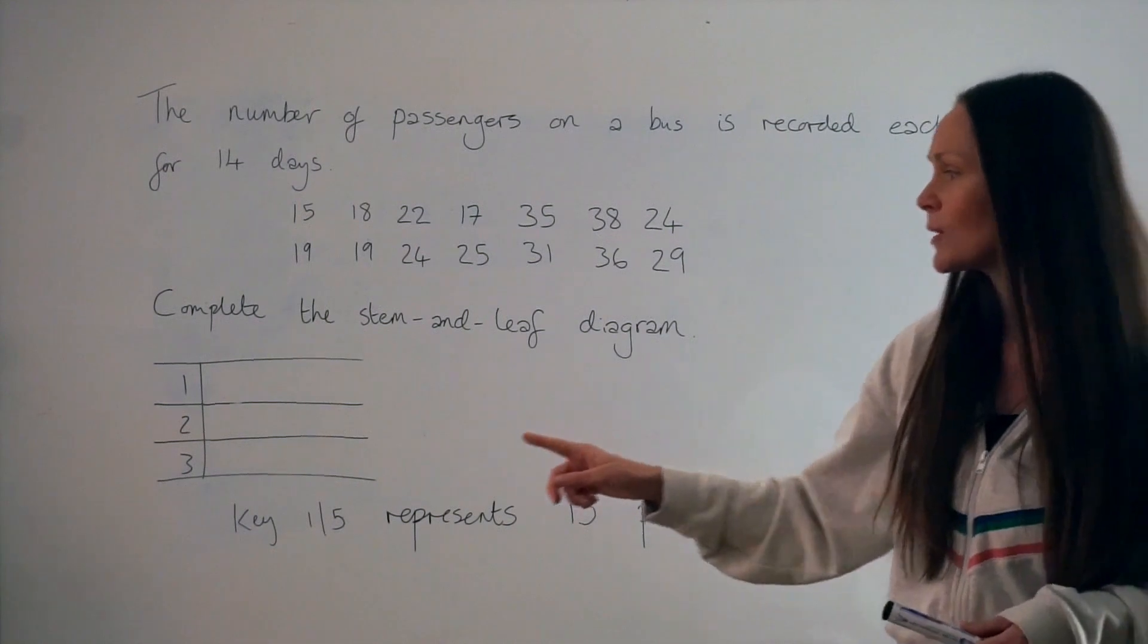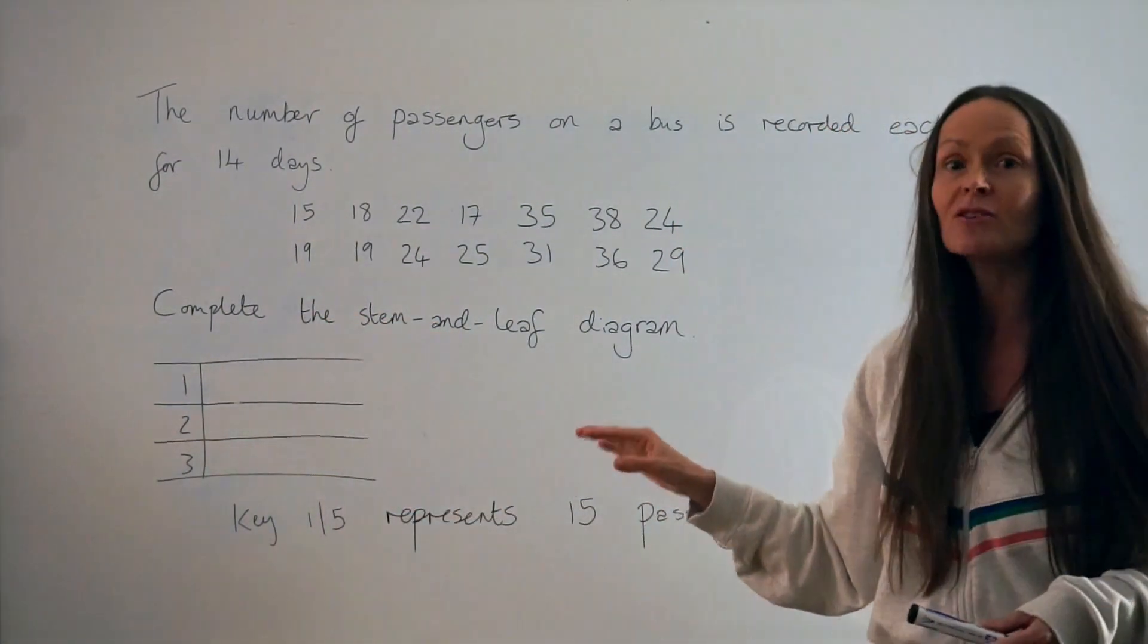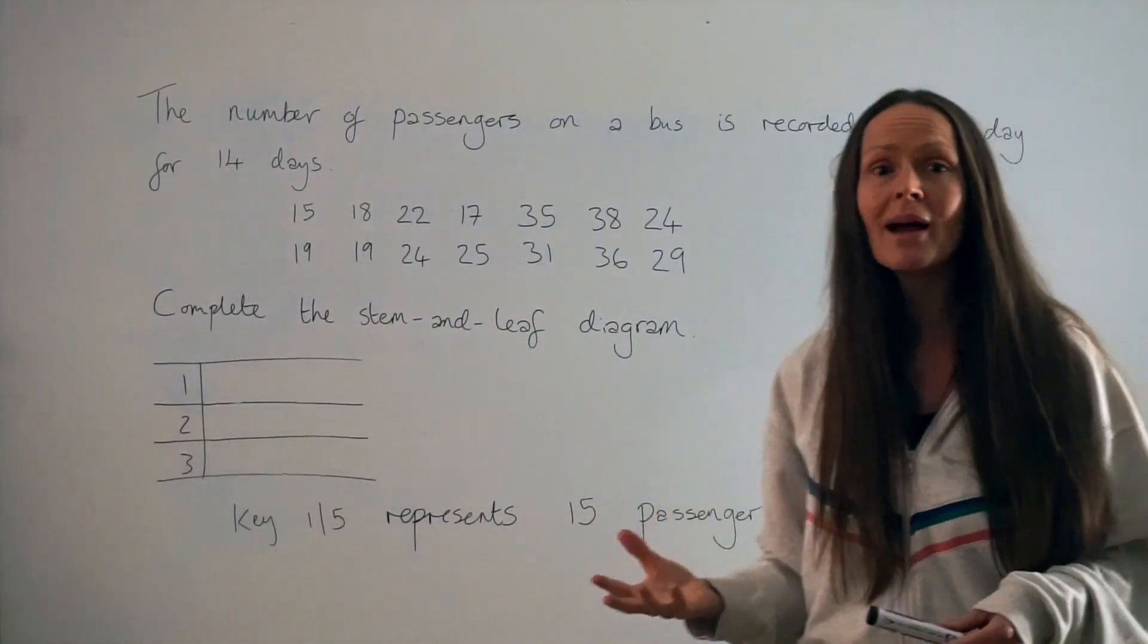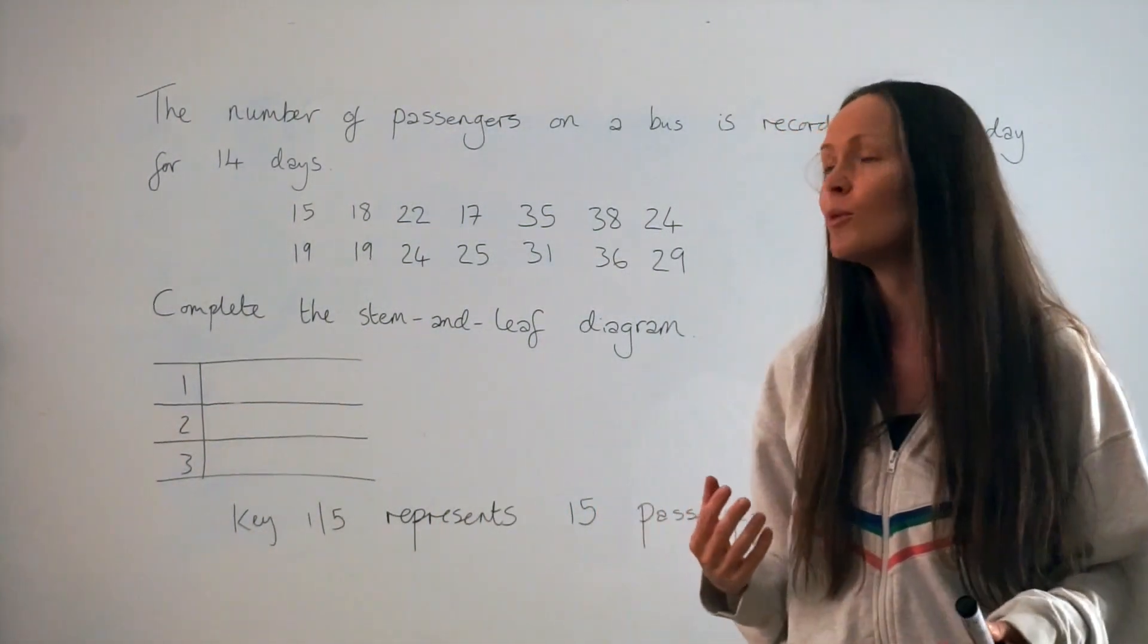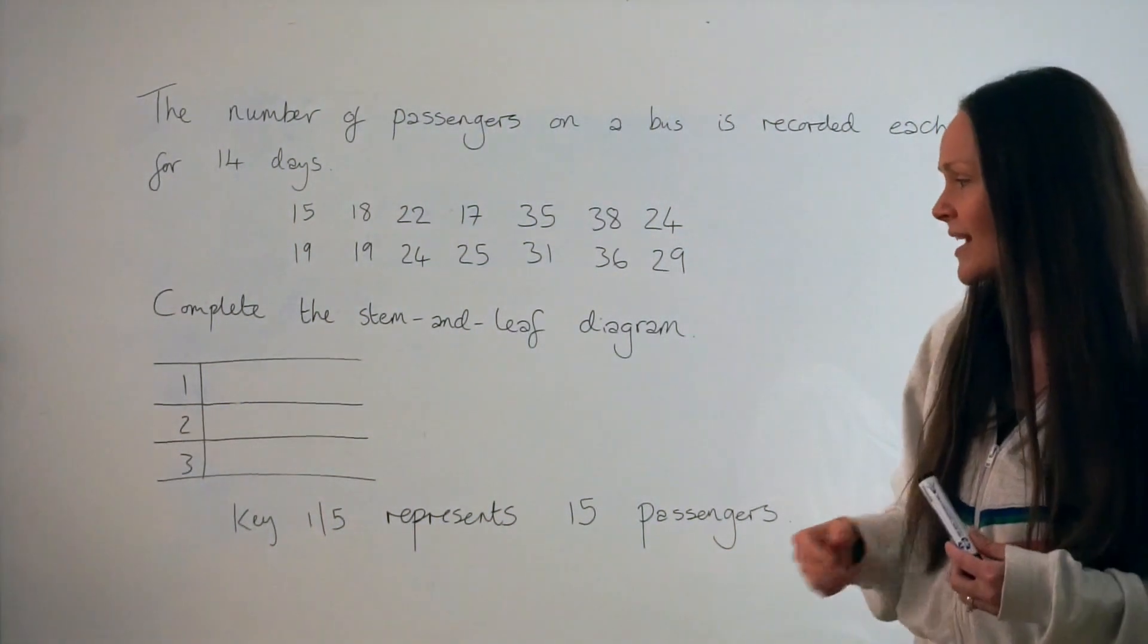Down below we have what we call a stem and leaf diagram. So this is where we're going to write all the numbers given above. It's a really useful way of organizing the data so that it's easier to find, for example, the median or the mode later on.